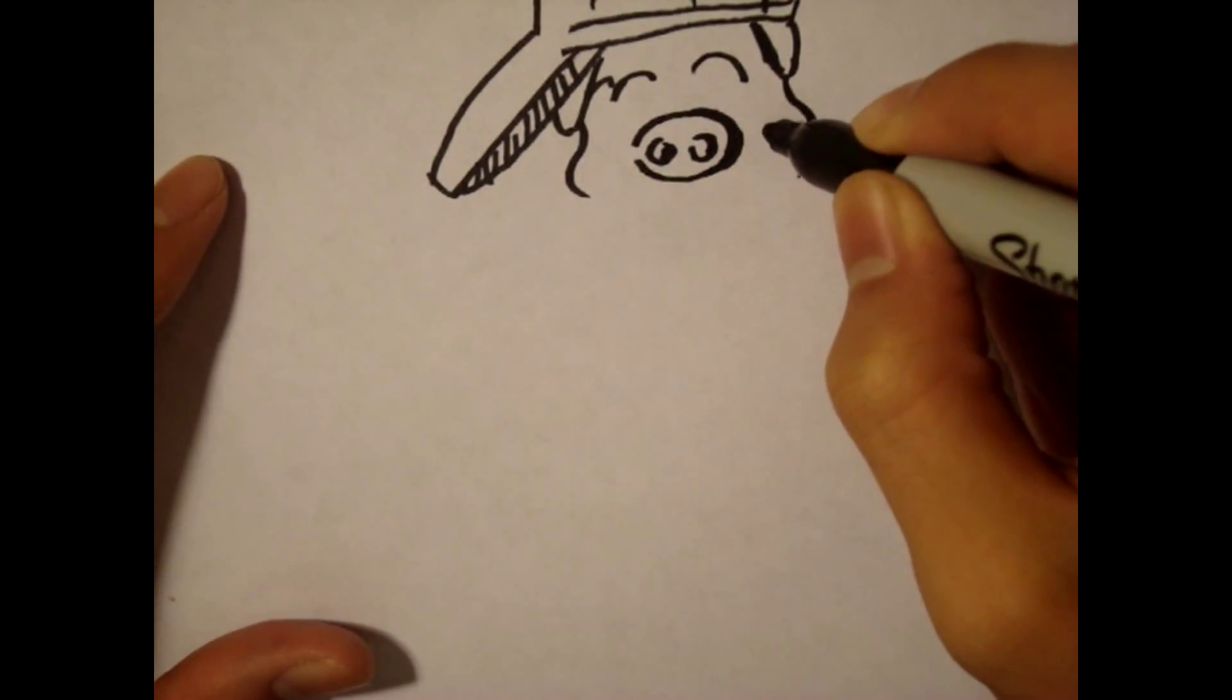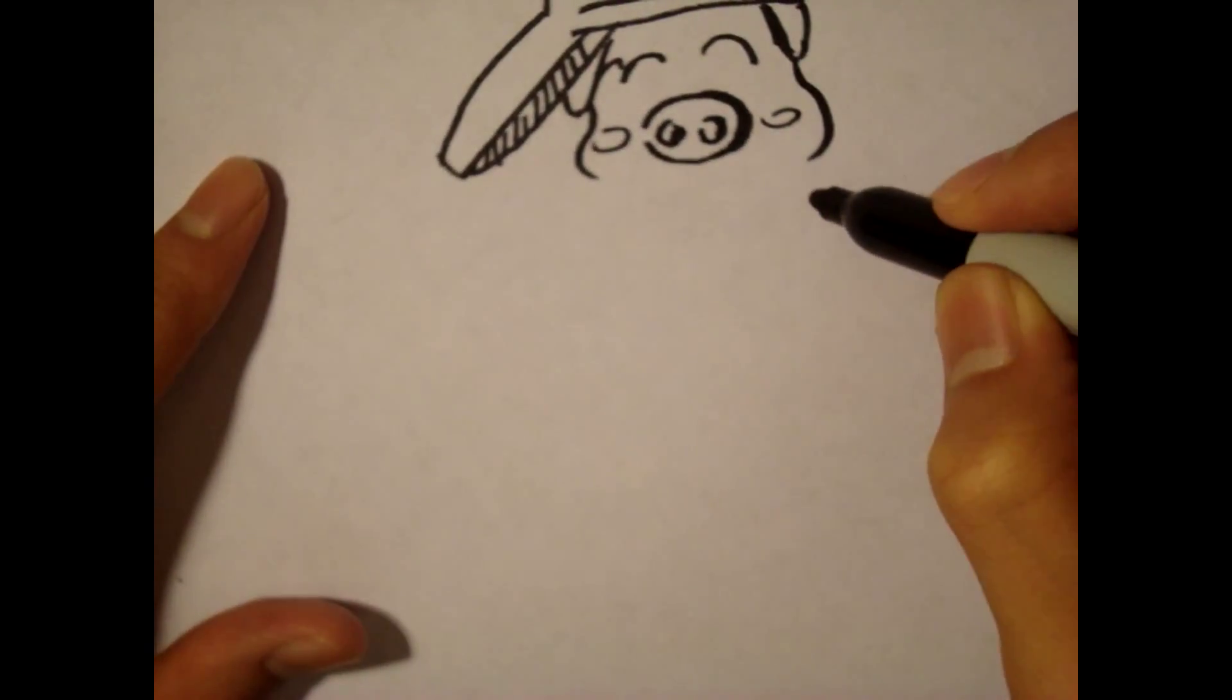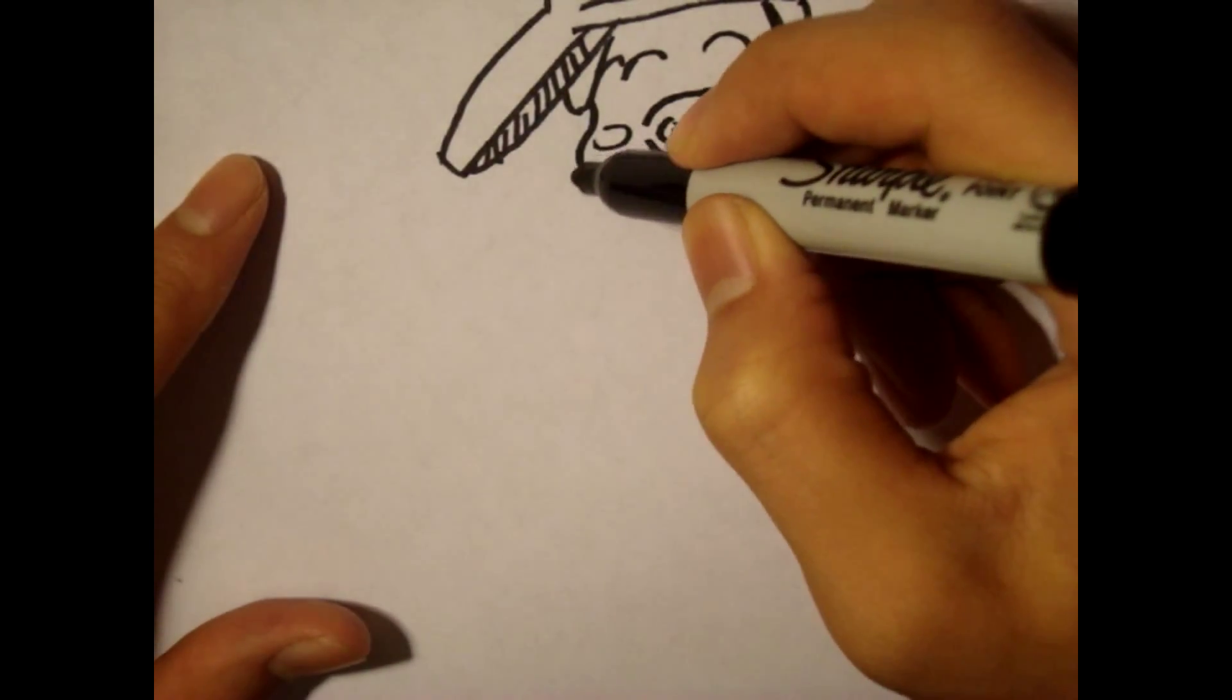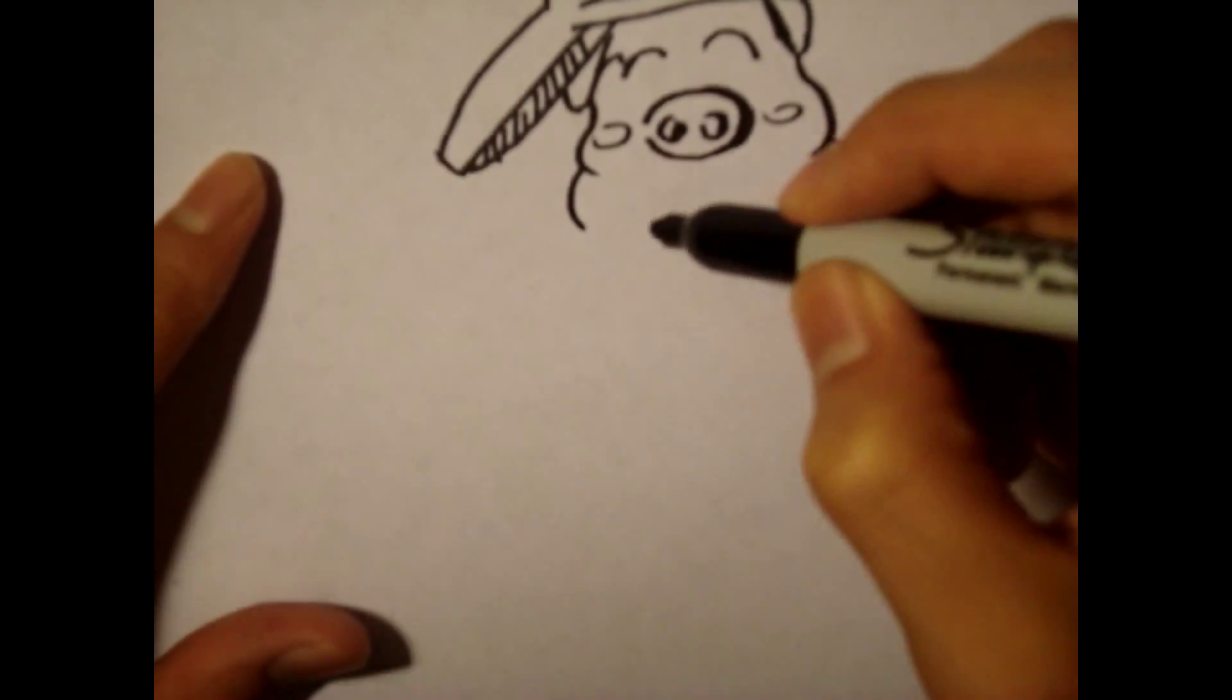So we're gonna draw kind of side things, and then we're gonna draw his hands. The hands will be putting on the back, and then we're gonna draw his hands.